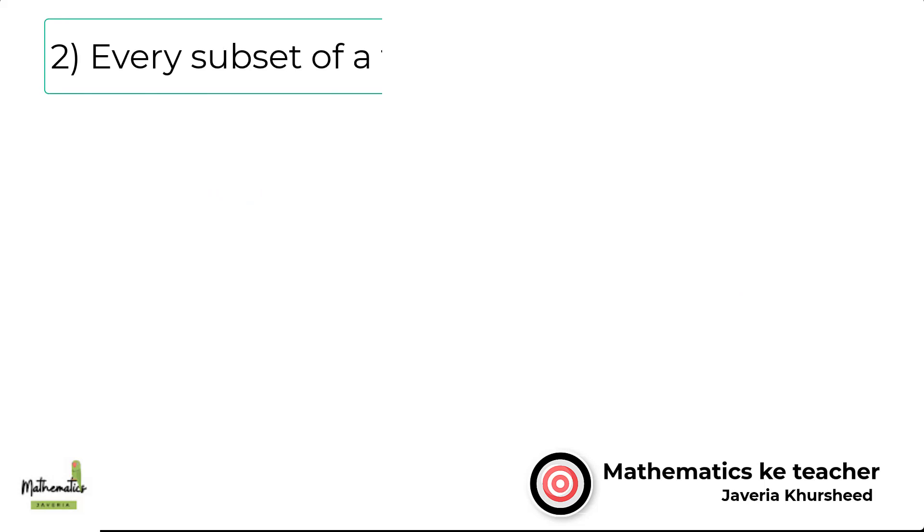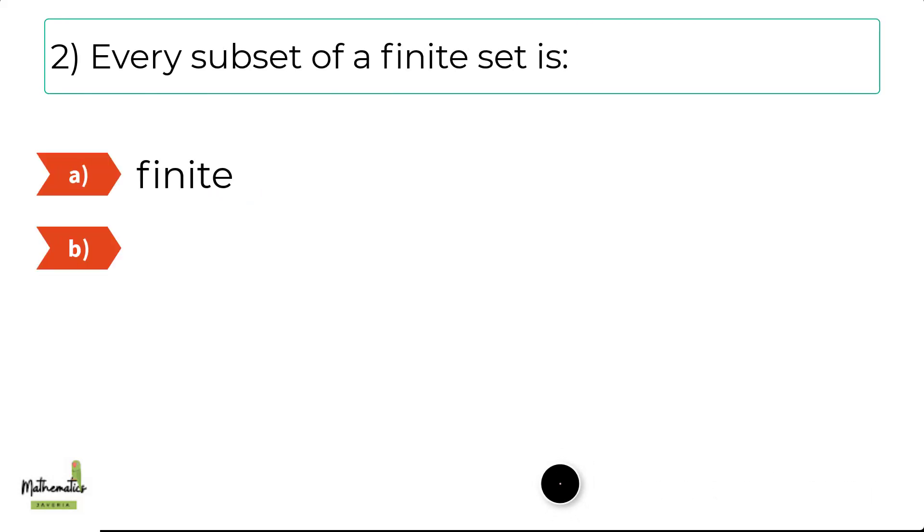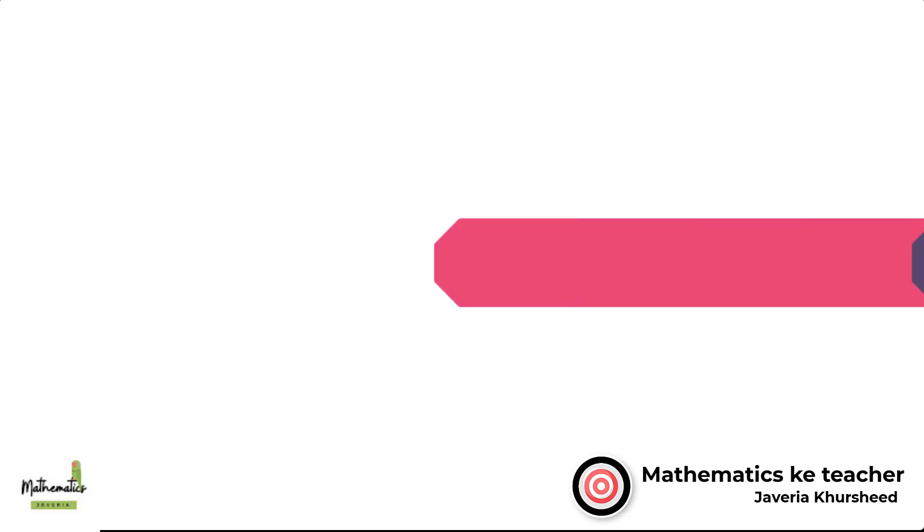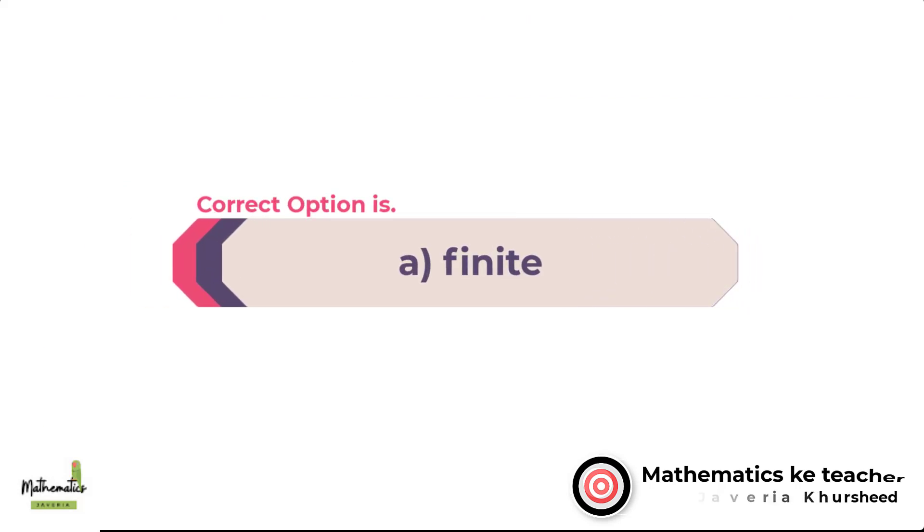Number 2. Every subset of a finite set is: A. Finite. B. Infinite. C. Real. D. None of these. The correct option is A. Finite.